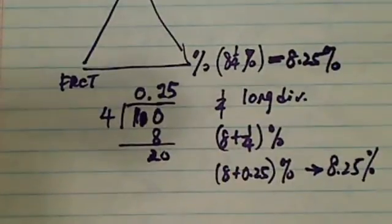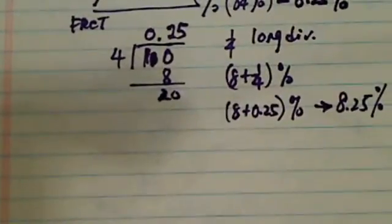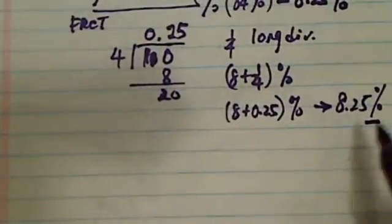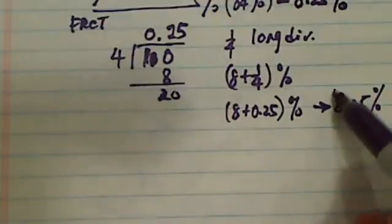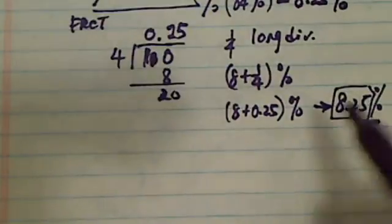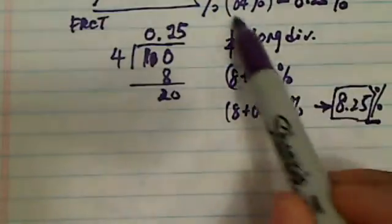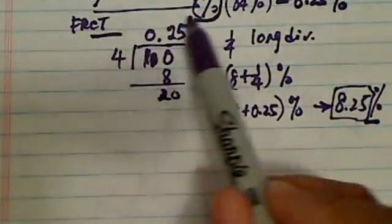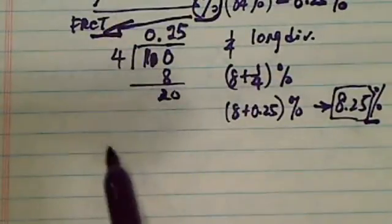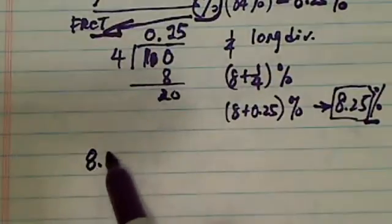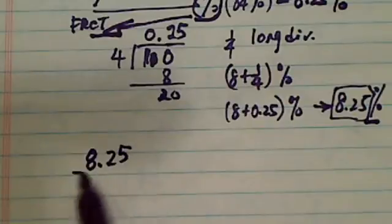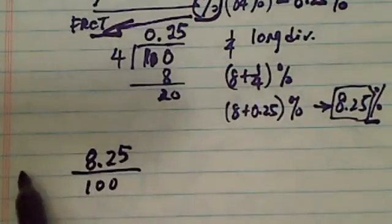Let's do the fraction. So a percent literally means per 100. So what we're going to do is, when you change things from the percentage to fraction, going this way, what you want to do is this: You want to do 8.25. Literally, you're going to write per 100 instead of doing the percent sign.